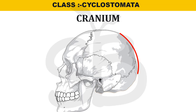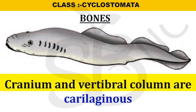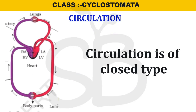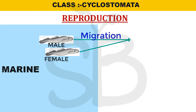The cranium and vertebral column are cartilaginous. That is why we discuss circulation — the circulation is of closed type, meaning blood flows through veins in a closed circulatory system.